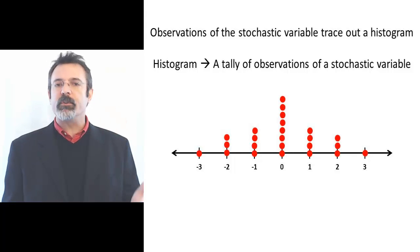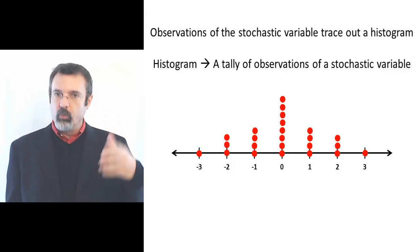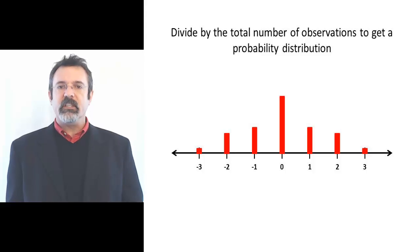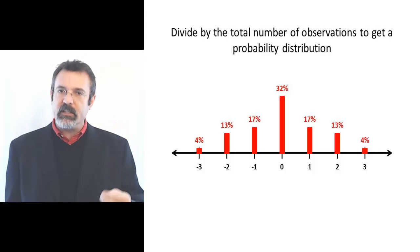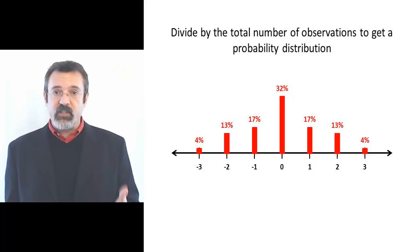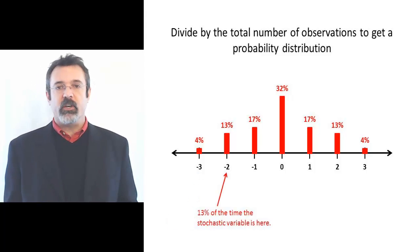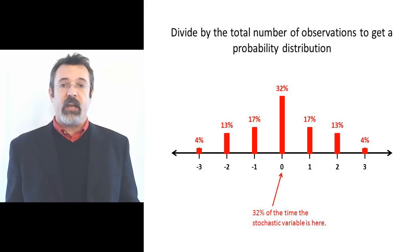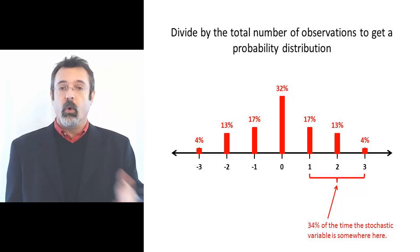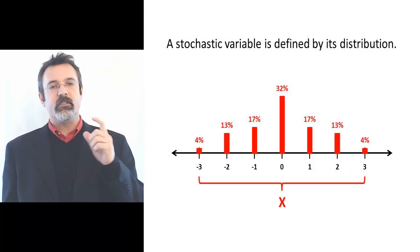The histogram is a visual representation of the different values that this stochastic variable has taken on. If we divide by the total number of observations on the stochastic variable, we get what we call a probability distribution. The probability distribution tells us the probability of the stochastic variable being located at each point on the number line. A deterministic variable is defined by its value. A stochastic variable is defined by its distribution.